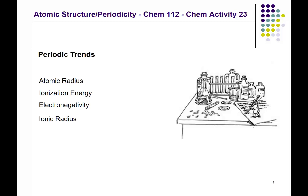In CHEM activity number 23 and the corresponding videos, we will be looking at the periodic trends in the periodic table. Can we predict the properties of elements based on their position in the periodic table? The answer is, remarkably, yes. The periodic table was first organized by classifying elements according to their properties and arranging them while noticing the possibility of trends.